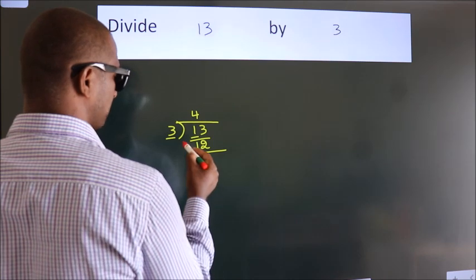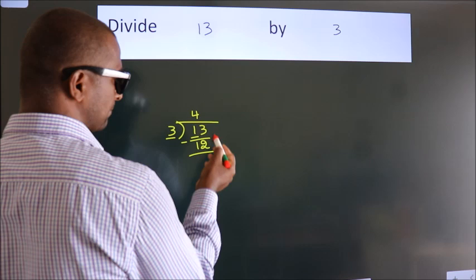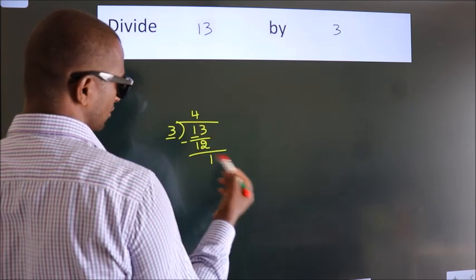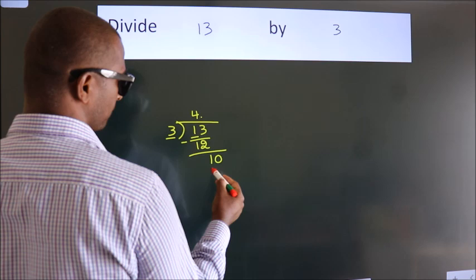Now we should subtract. We get 1. After this, no more numbers to bring down. So what we do is, we put a dot and take 0. So 10.